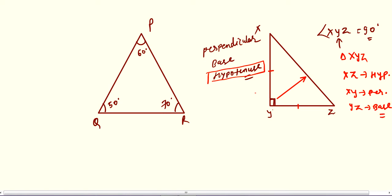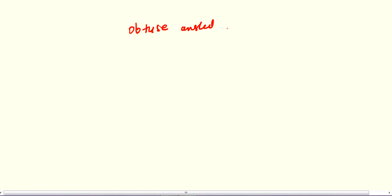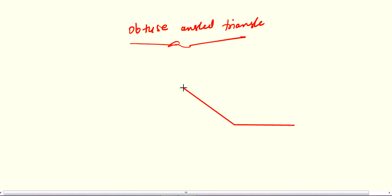In a right angle triangle, one angle will be exactly 90 degrees. The third type is obtuse angled triangle. In an obtuse angled triangle, one angle is greater than 90 degrees, and the other two angles are less than 90 degrees.